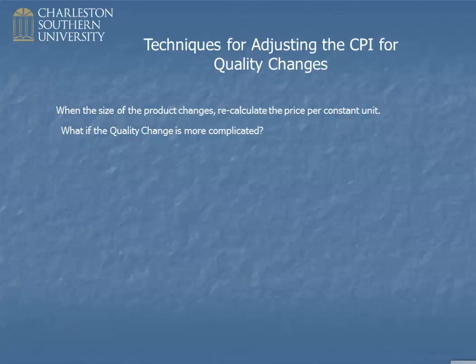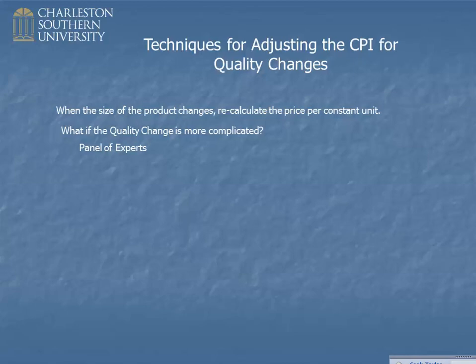For these complex quality changes the Bureau of Labor Statistics uses several techniques. The first and simplest to understand is a panel of experts. They gather engineers, marketing people, consumer advocates, and sometimes actual consumers, put them in a conference room, and have them reach agreement about what's happened to the quality of a product. The panel produces a report stating something like: this new model is 5% improved quality, or 20% less quality.